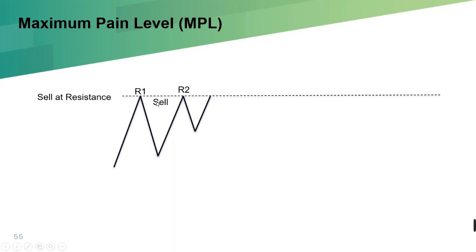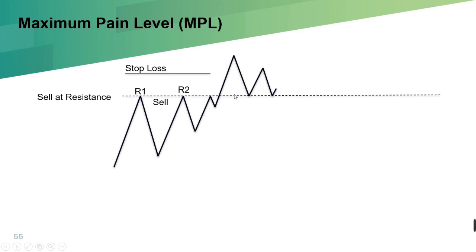A lot of people will sell at the resistance like previous times, and they will place their stop loss above. But something happens — the price does not stop at the resistance. It bulldozes all the way to the top. A lot of traders get their stop loss hit and lose their money. Eventually the price came down to this resistance again, but now it has become a support — S1 and S2. Traders again think this is a very strong support and the price will rebound, so they place their stop loss below. But the price came down and hit their stop loss.